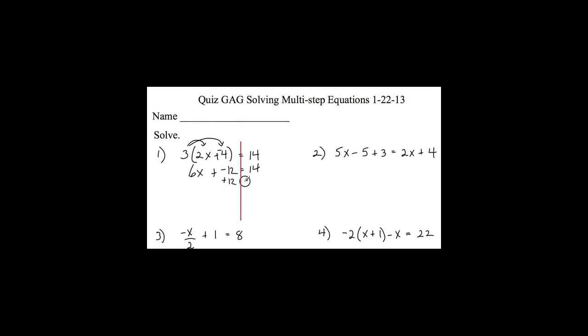Now I'm left with a two-step equation. I do the opposite of negative 12, which is positive 12. Those cancel, leaving 6x equals 26. Opposite of multiplying by 6 is dividing by 6. The fraction doesn't divide evenly, so I simplify by dividing numerator and denominator by 2, and I get 13 thirds.